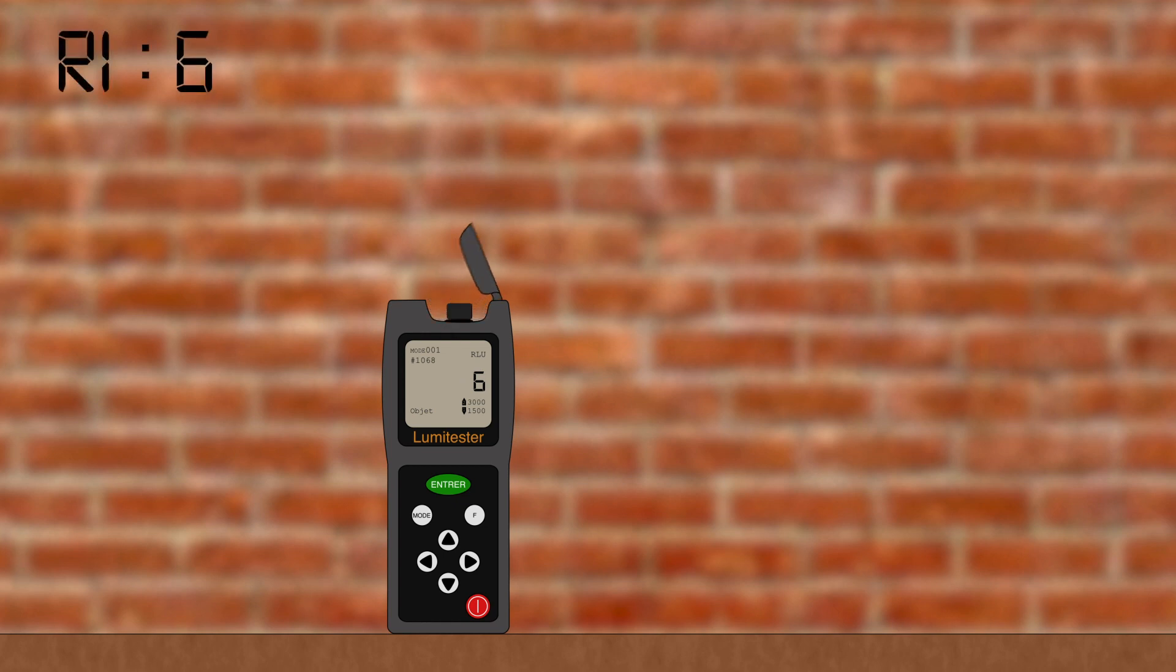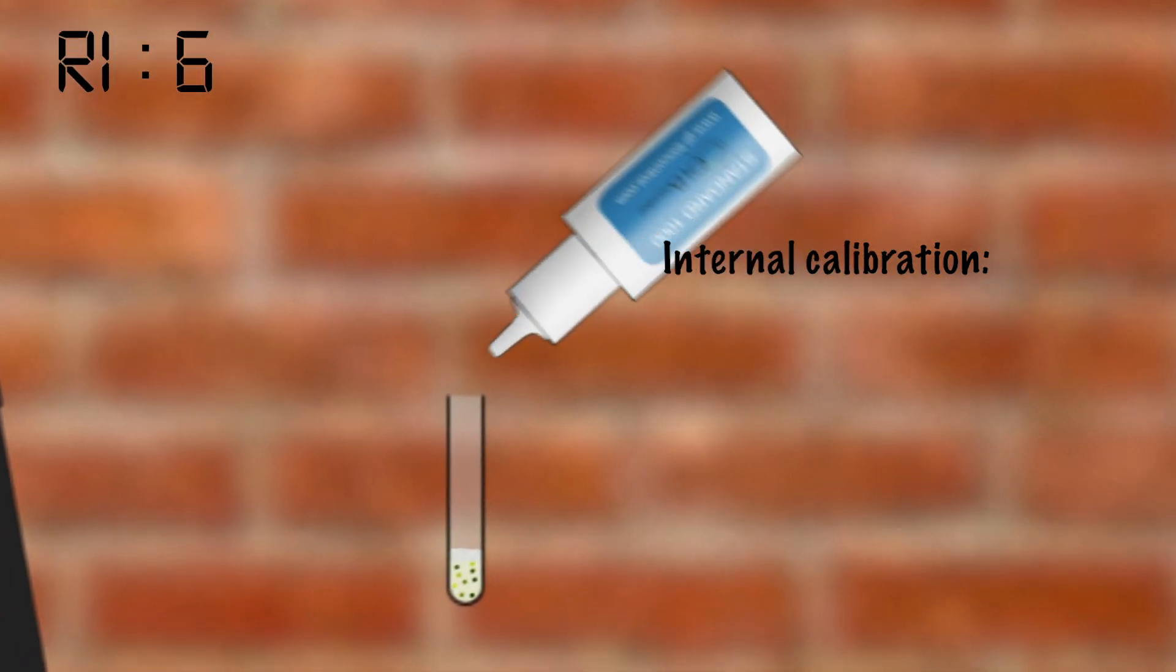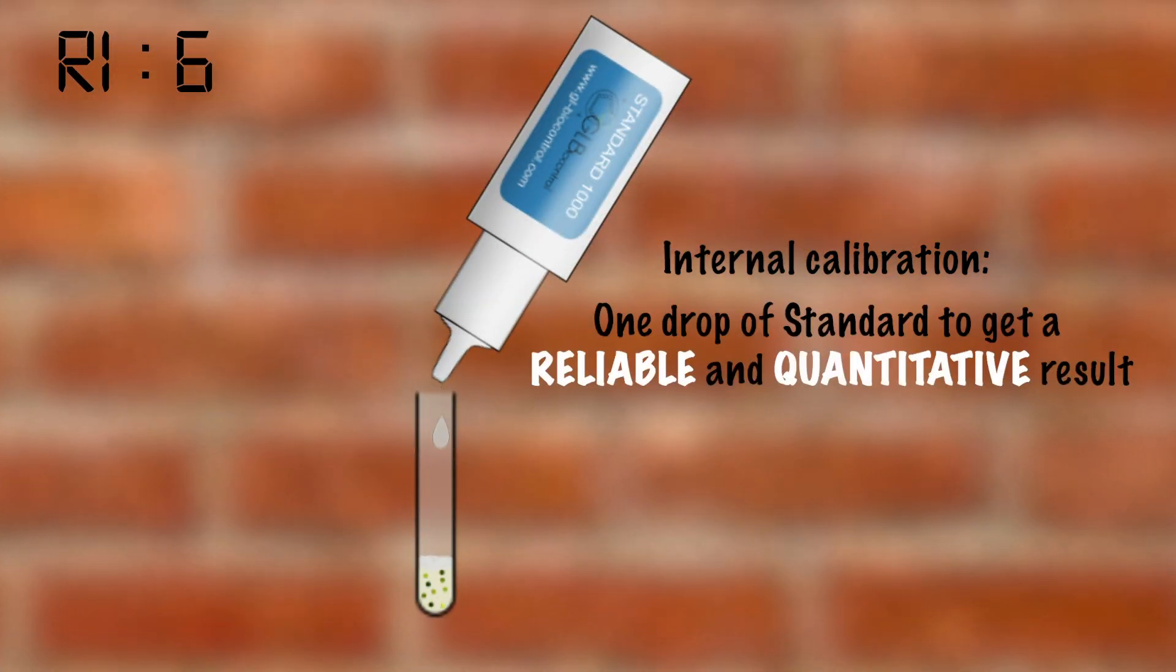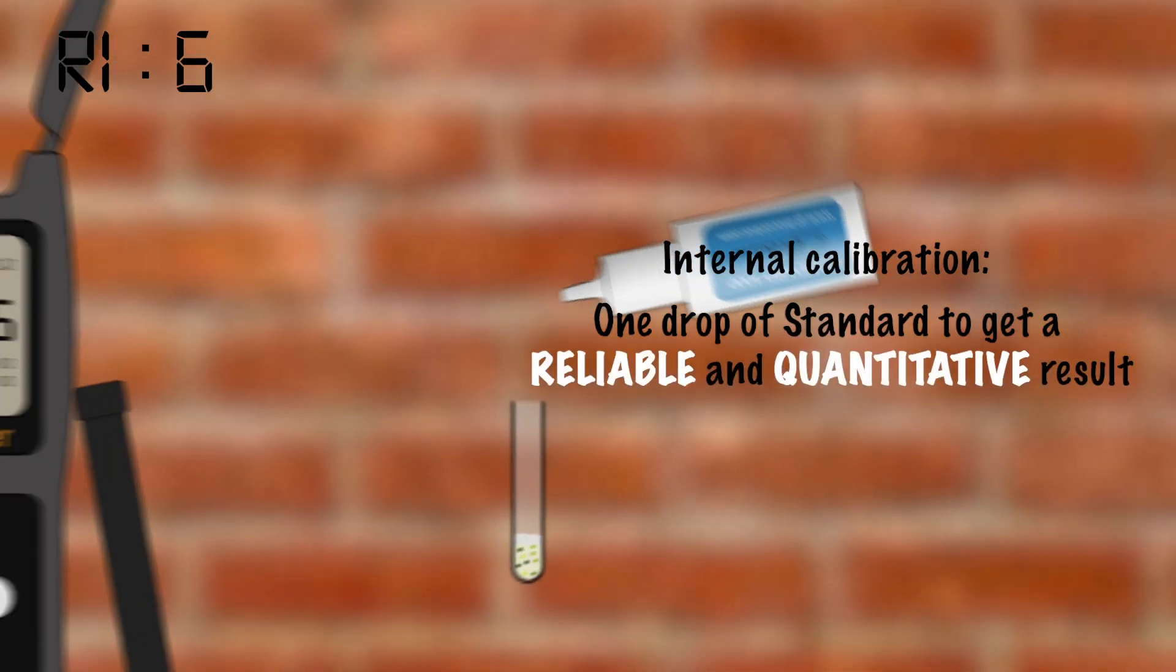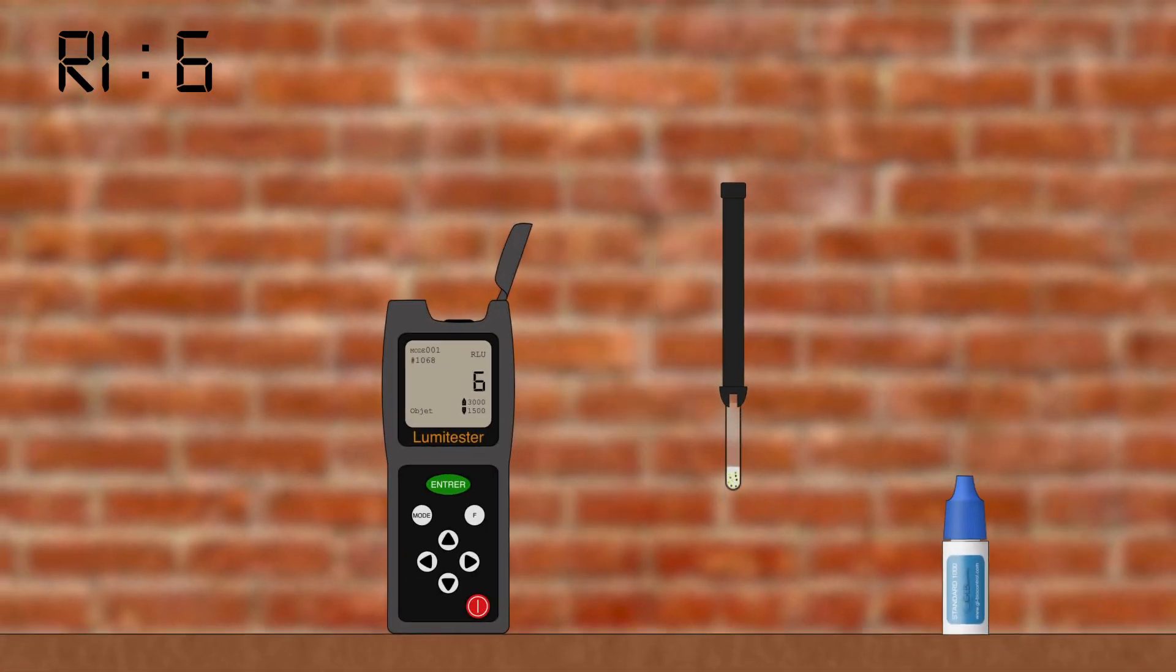Then, to get a quantitative result, we do an internal calibration for each analysis. Add one drop of standard corresponding to a precise quantity of ATP. Then perform a second measurement. Note the second result, R2.